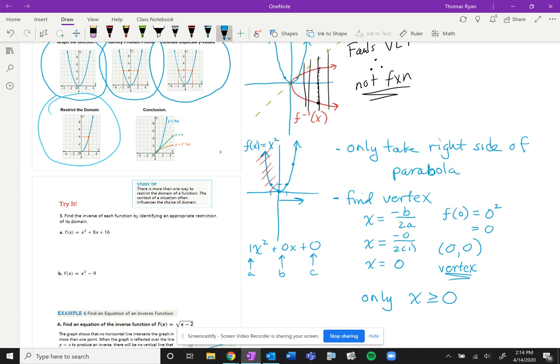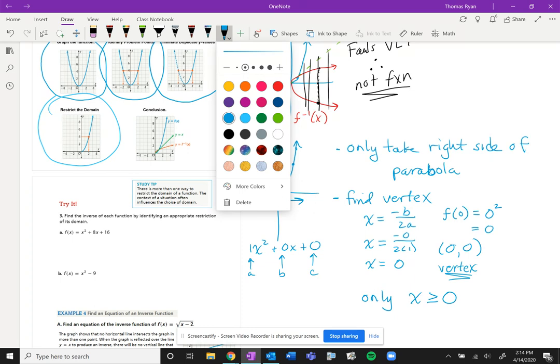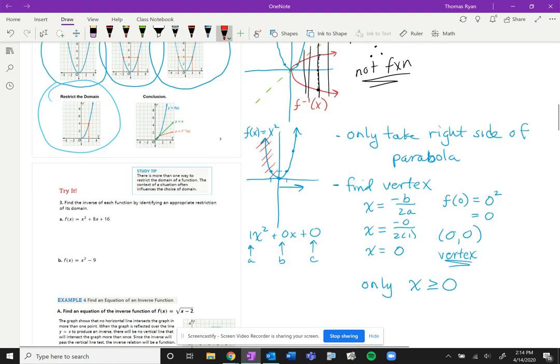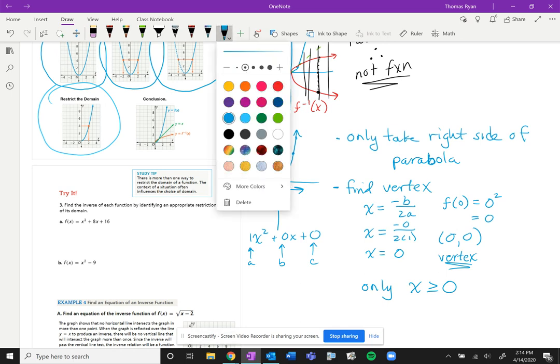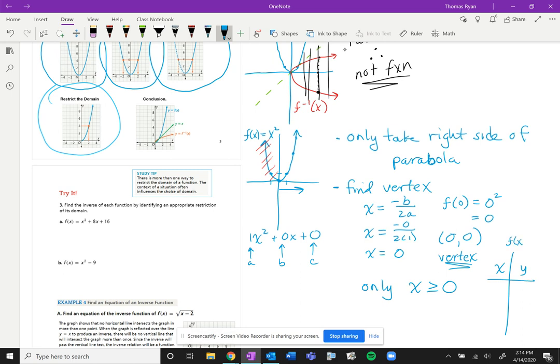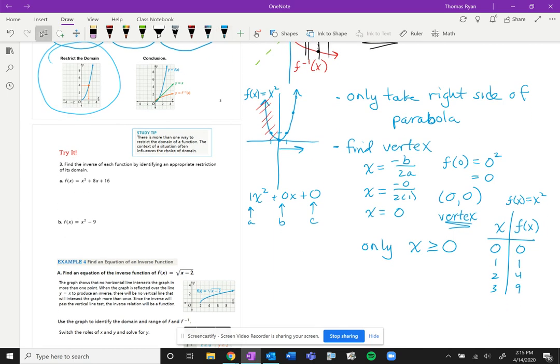Naturally enough, we say we only want x values that are greater than 0. Let's make a quick table—only x values that are bigger than 0. Tables are a great way to do that. Remember our function is x squared. Let's be precise here, let's do x, f of x. So we want 0, 0 squared is 0. We want 1, 1 squared is 1. We want 2, 2 squared is 4. We want 3, 3 squared is 9. So we only want those x values, because then when we go to flip it we won't get those duplicates.